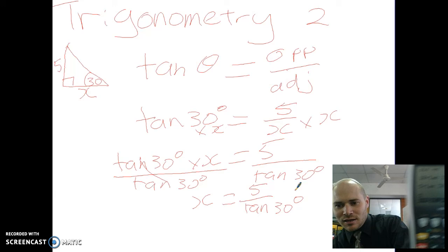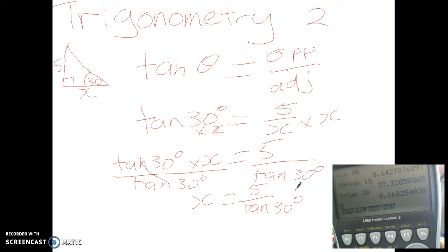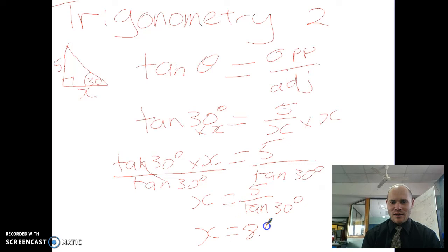And my answer is 5 square root 3. So I hit f to d and it gives me a better answer of 8.66. So I then go x equals 8.66.